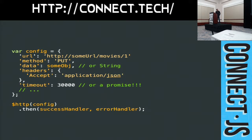The config object has a bunch of attributes: URL, method, data. You can even set a headers object for a specific request — for example, accepting only application/JSON for this request, whereas globally you might be accepting application/XML. One interesting thing from 1.3x is the timeout property. You can give timeout a number — say 30 seconds — and XHR will timeout the request. The XHR object is the one actually doing the timeout work.